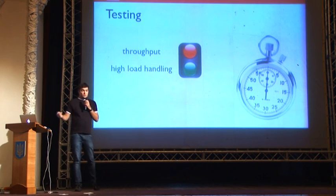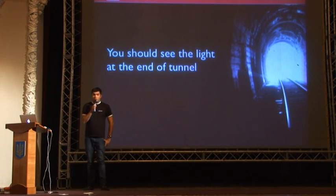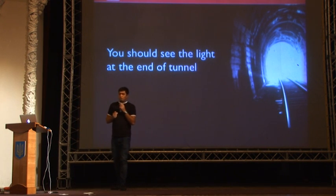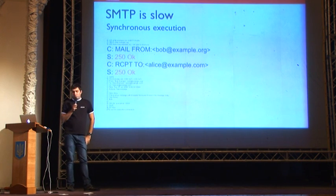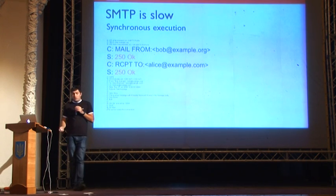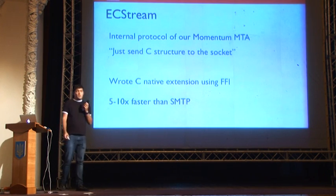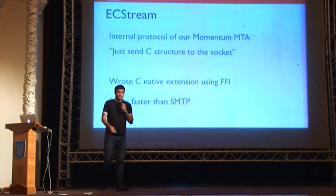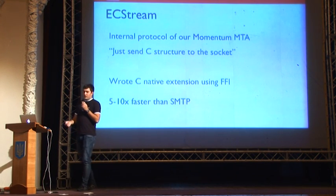At this point you might think it's not possible to build the solution you need, but you should believe in the success of your project and look for the light at the end of the tunnel. We found the slow part was SMTP — sending MAIL FROM and waiting for response, sending RCPT TO and waiting. We dug deeper and found our proprietary SMTP server had an internal protocol requiring only sending the email as a C structure to a socket. We implemented a native extension using LibFFI, and tests showed this solution was 5 to 10 times faster than SMTP. We ran our test suite and passed.